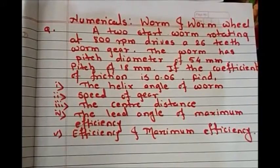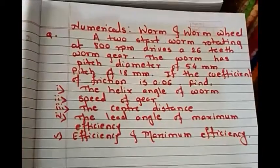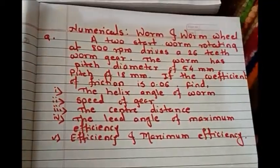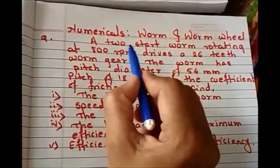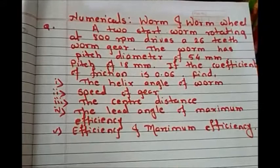Hello everyone, as we finished the theory part related to worm and worm wheel, today we are going to discuss numericals based on it. Here we have the statement: a two-start worm rotating at 600 rpm, so let me write the given data.